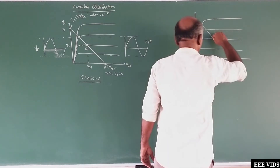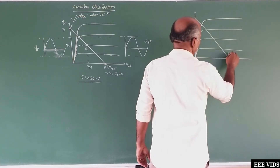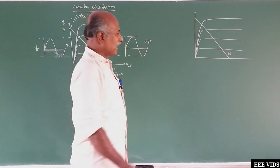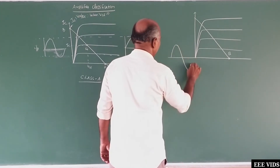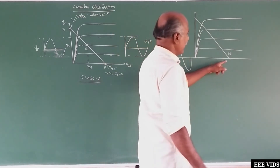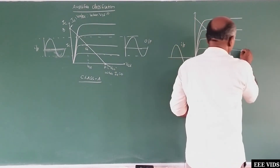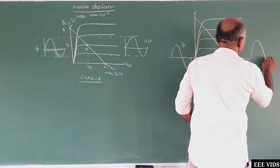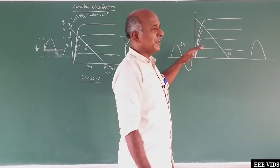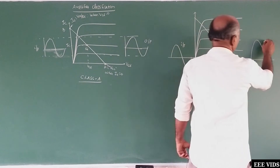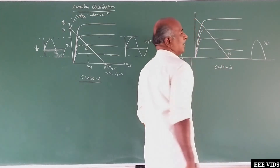This is the DC load line. Now we choose this operating point Q. When we apply the input signal — with a positive half cycle and a negative half cycle — at this operating point, one half cycle produces output while the other does not. So only one half cycle is amplified. This is the Class B amplifier.